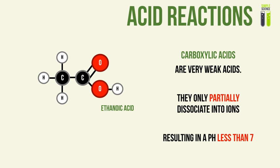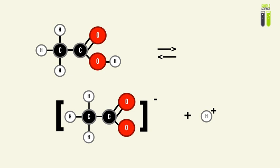Carboxylic acids are inherently acids, but they are very weak acids. They only partially dissociate into ions, which results in a pH of less than 7 — nothing compared to the very low pHs of strong acids such as hydrochloric acid or sulfuric acid. As shown by the equilibrium symbol, the carboxylic acid can exist in two states: as a full molecule, or dissociated into a negative ethanoate ion and a positive hydrogen ion. This demonstrates the partial dissociation of this organic molecule.